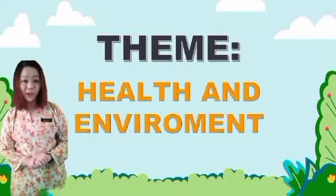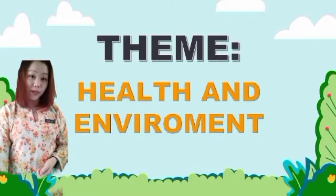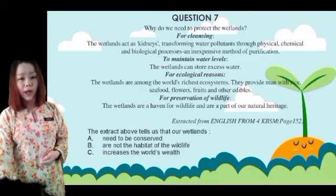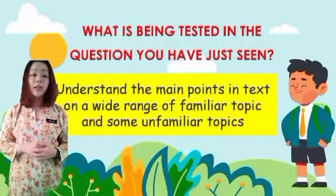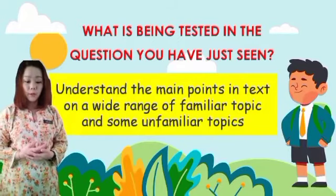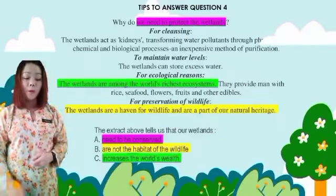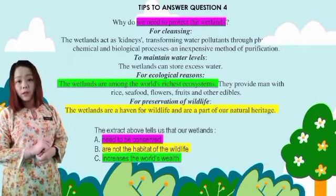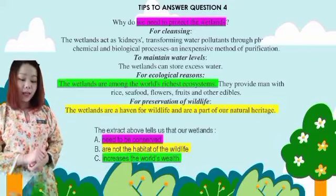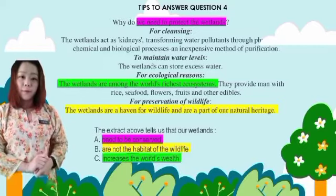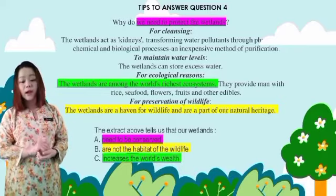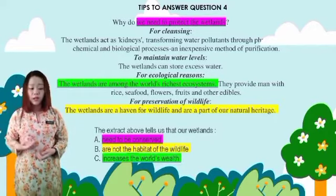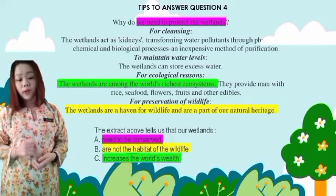Now we move on to the last two questions, which are based on the theme of health and environment. Question number seven is about protecting the wetlands. The extract tells us that our wetlands... This tests whether you understand the main points in text on a wide range of familiar topics. Option A: need to be conserved. The word 'conserved' means protected. From the text, we need to protect the wetlands, which matches option A. Option B: are not the habitat of wildlife. From the text, the wetlands are a heaven for wildlife and part of our natural heritage, meaning it is the habitat of wildlife. Therefore, option B is incorrect.